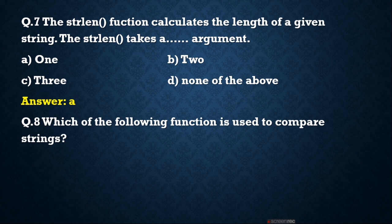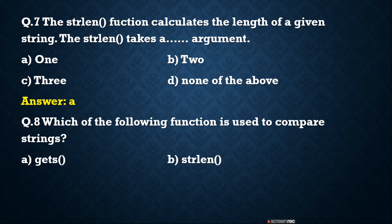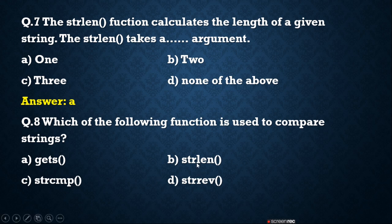Which of the following functions is used to compare strings? Comparison is based on the ASCII character value. When both strings are the same, the answer will be 0. If the first string is greater than the second, the output will be positive. If the second string is greater than the first, the output will be negative. The correct answer is C, strcmp function.